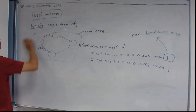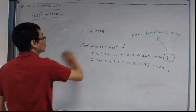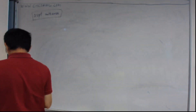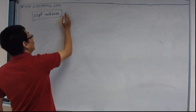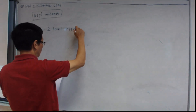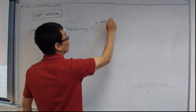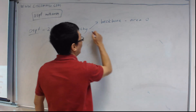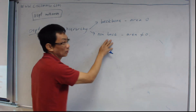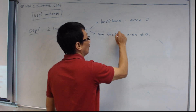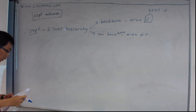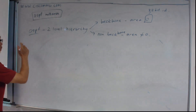Then we go through multi-area. In OSPF you can split the area — OSPF is a two-level hierarchy, which means you can have a backbone area, which is area 0, and you can have a non-backbone area, which is anything not equal to 0. The area ID is a 32-bit ID.